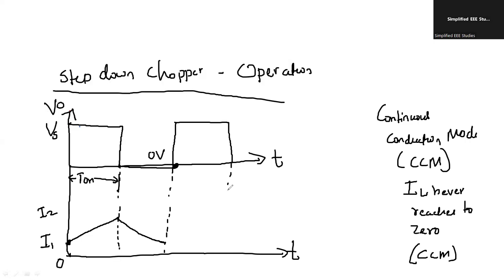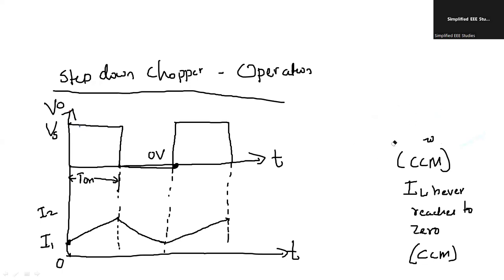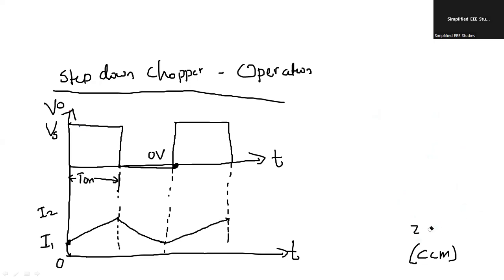Whenever the switch is again on, the current starts increasing again — it follows the law of energy conservation. We need to compute the average inductor current. Now we can justify how the average output voltage is getting reduced. I am going to derive an expression for average output voltage.